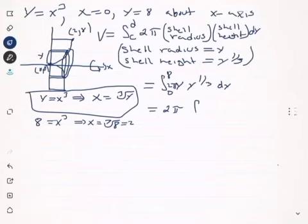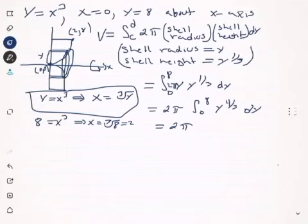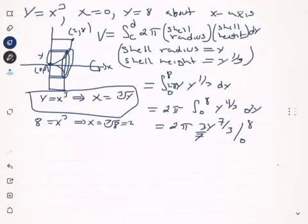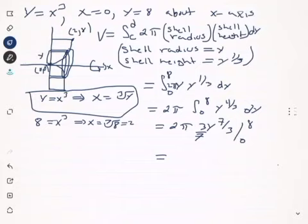Taking the 2π out and integrating from zero to eight: y times y to the one-third gives y to the four-thirds. Integrating gives 2π times y to the seven-thirds times three over seven, evaluated from zero to eight. Plugging in eight for y everywhere gives a final answer of 768π divided by seven.